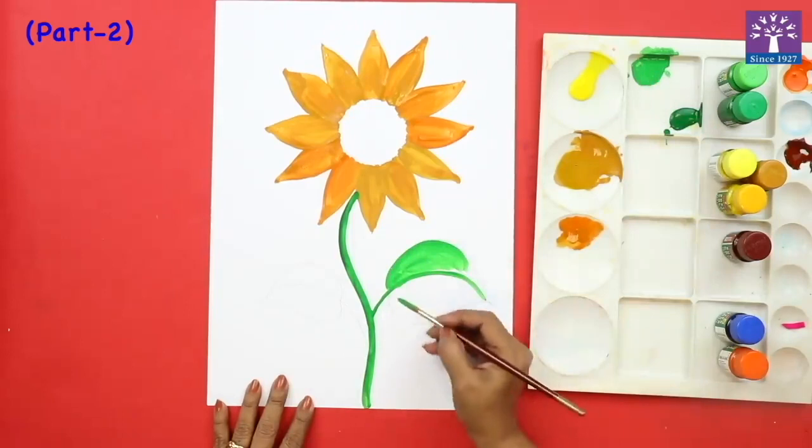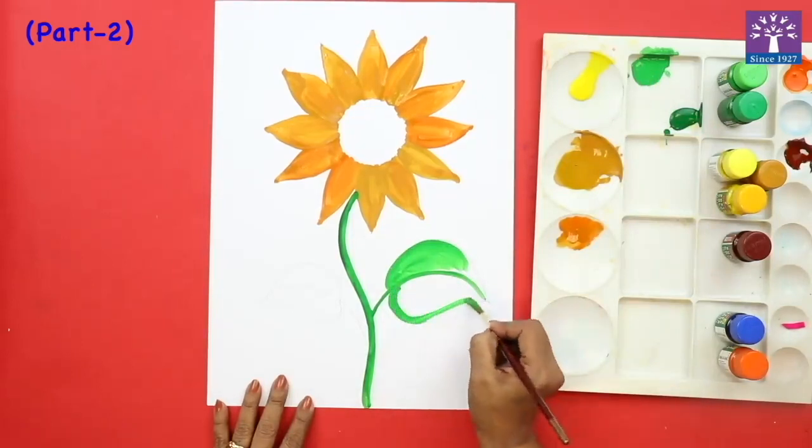So we will paint the leaves. It's okay if you have uneven strokes. It looks a bit natural.